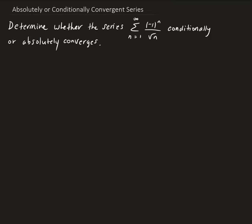In this lesson, we are going to determine whether the series is conditionally converging or absolutely converging. Let's check the original series first. This turns out to be an alternating series, so we can apply the alternating series test.